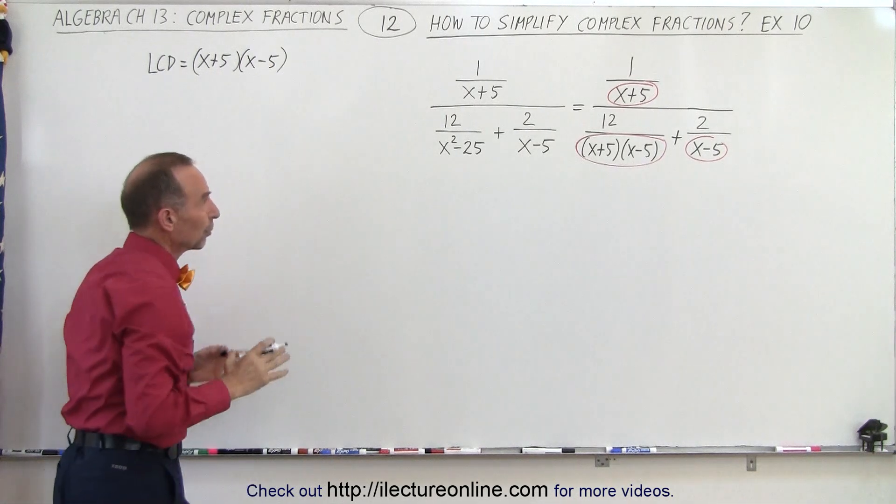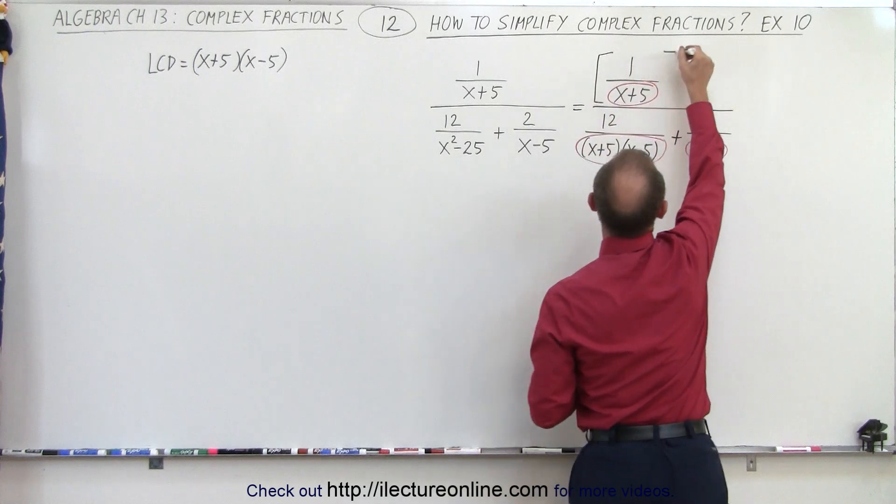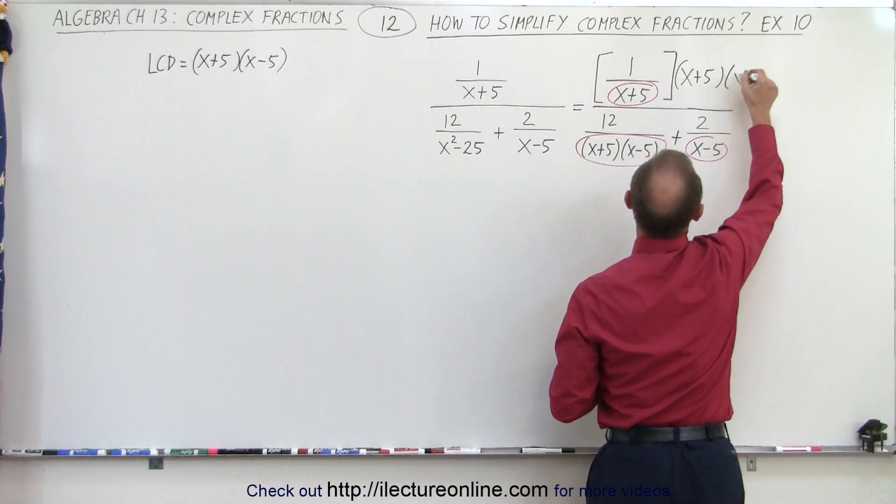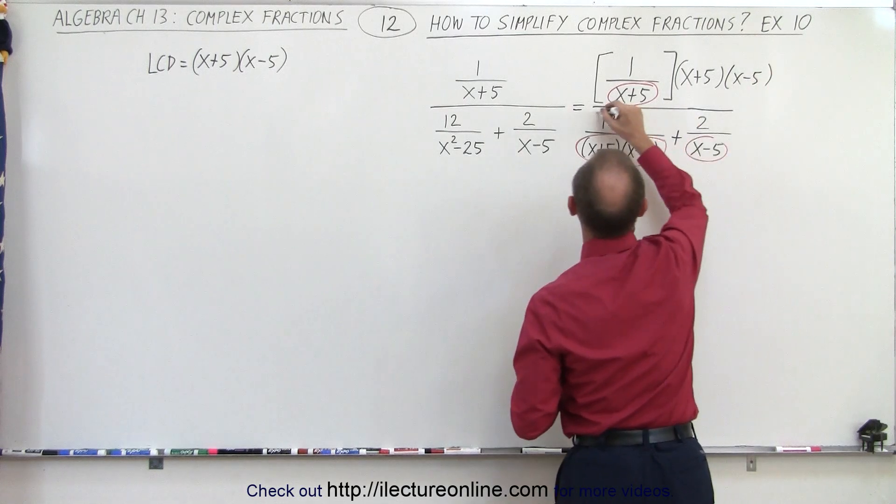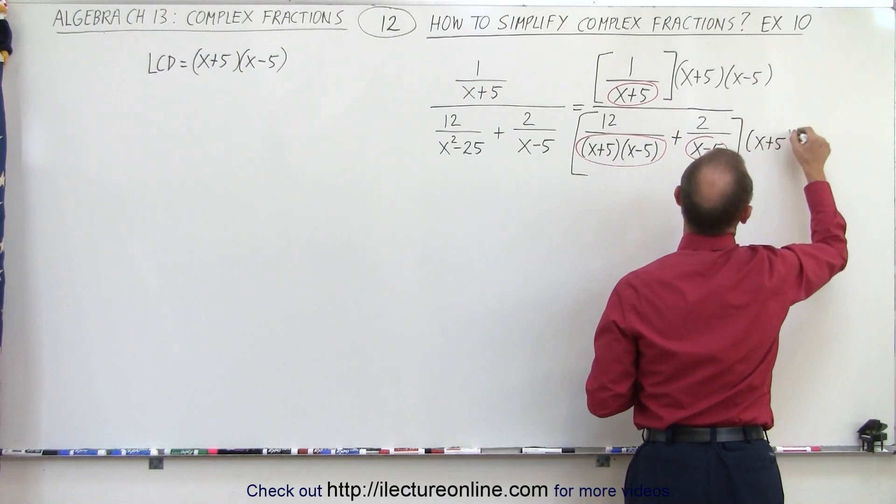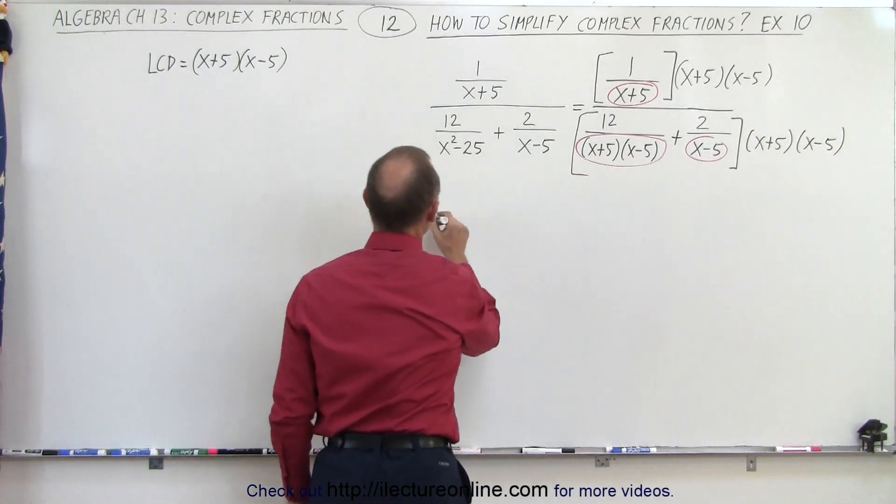So now we're going to multiply the numerator and the denominator by that lowest common denominator. So here we multiply this times x plus 5, times x minus 5. And the same over here, we multiply this times x plus 5, times x minus 5. And when we do that, we get the following.